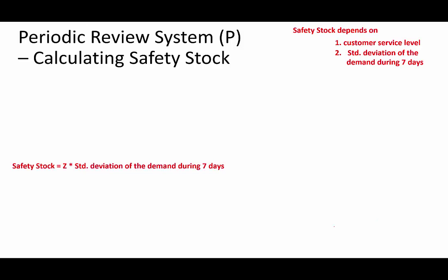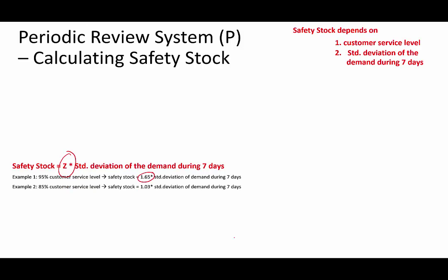Specifically, safety stock is Z times the standard deviation of the demand. Based on the customer service level, you can calculate Z. This Z is a statistical figure also known as the standard score. For example, to satisfy demand with a 95% customer service level, it is necessary to carry extra inventory equal to 1.65 standard deviations of demand variability — this is equivalent to a Z-score of 1.65. Similarly, a customer service level of 85% corresponds to a Z-score of 1.03.